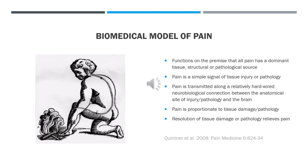Much of our understanding of pain has been based on the biomedical model of pain, which functions on the premise that all pain has a dominant tissue, structural, or pathological source or cause. It also assumes that pain is a simple signal of tissue injury or pathology, transmitted along a relatively hardwired neurobiological connection between the anatomical site of injury and the brain, and that pain is directly proportionate to any degree of tissue damage, and that resolution of tissue damage should be accompanied by relief and resolution of pain.